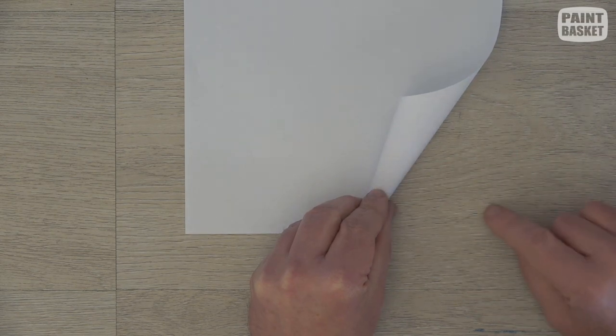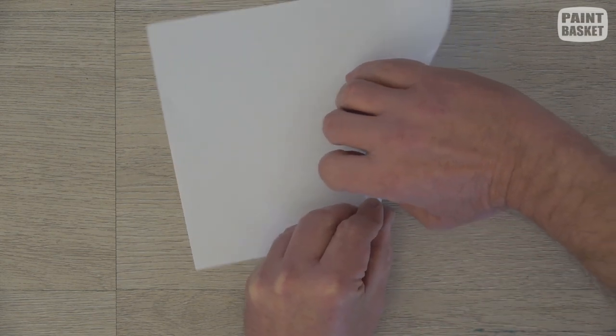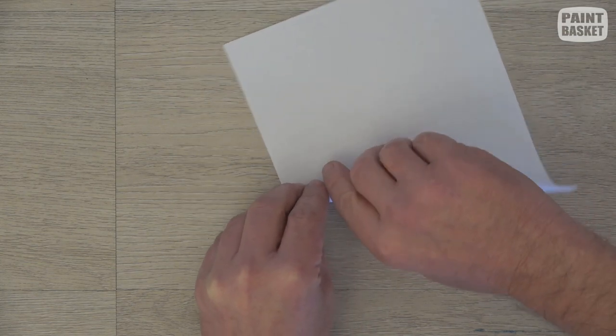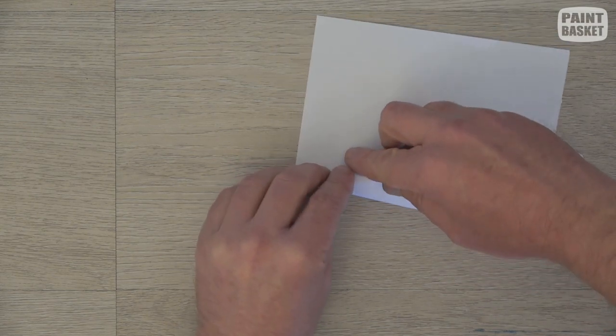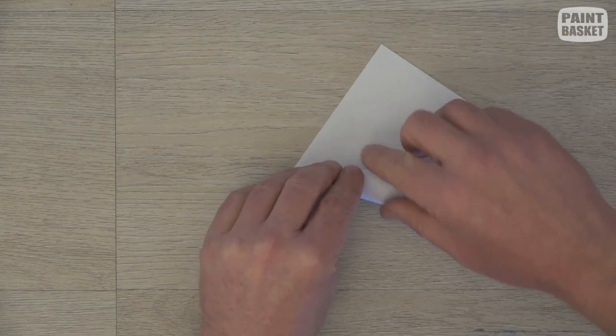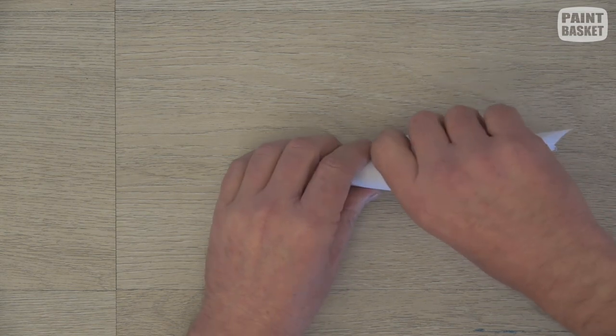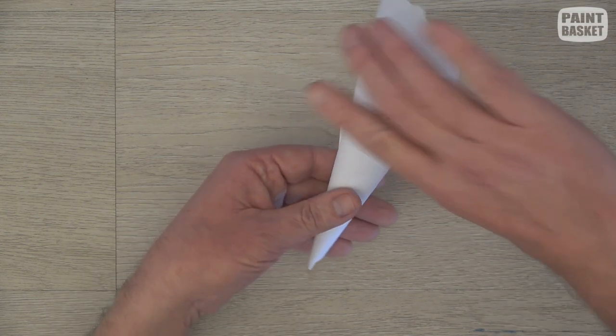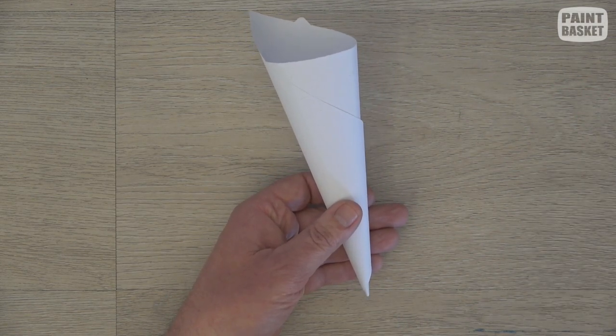And now you can hold this side steady and roll this guy up the back edge. So I'll just turn him sideways and roll him up. So don't worry how he looks at this stage.